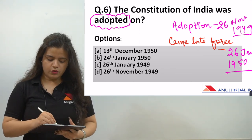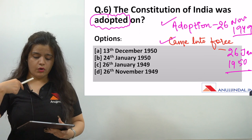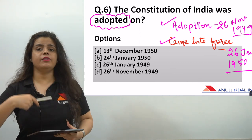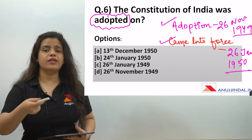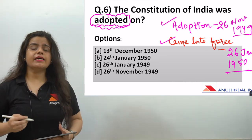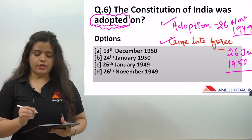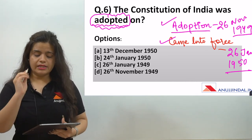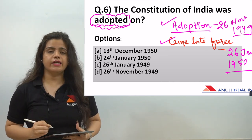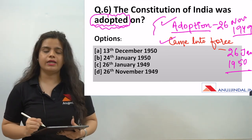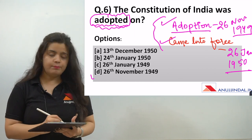We need to remember both of these. If the question asks when the Constitution came into force, the answer is 26th January 1950. But if the question asks specifically about adoption, the answer is 26th November 1949. We must remember both differences and read carefully what is being asked.